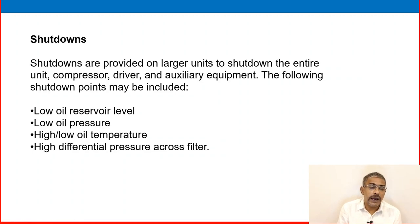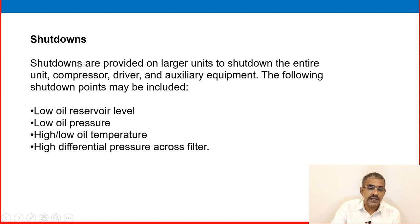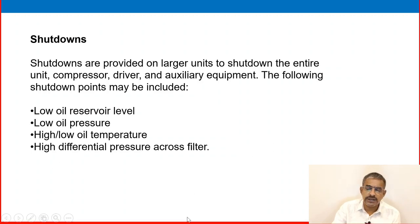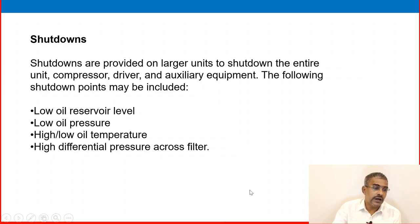Alarms indicate deviation from set points, and shutdowns activate on high-high or low-low conditions to protect the compressor. Shutdown points typically include: low oil reservoir level, low oil pressure, high or low oil temperature, and high differential pressure across the filter. On larger units, shutdowns cover the entire unit including the compressor, driver, and auxiliary equipment. External safety systems such as instrument air pressure and fire and gas detectors are also incorporated.